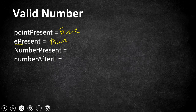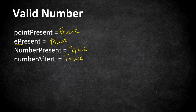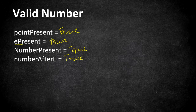'number_after_e' is set to true initially — the reason will be explained shortly. We iterate through the string character by character, updating these four variables. In parallel, we check if any condition points to an invalid number and immediately return false. If iteration completes without returning false, the number is valid and we return true.